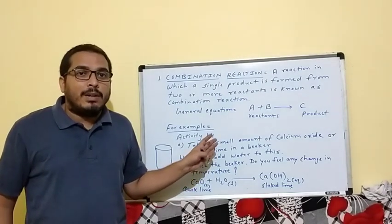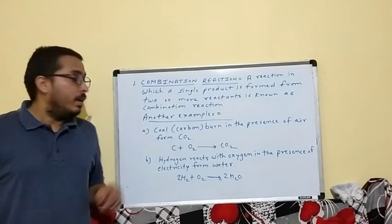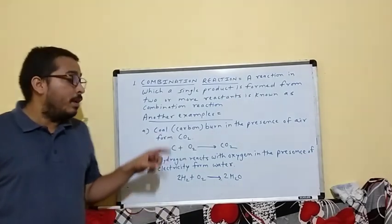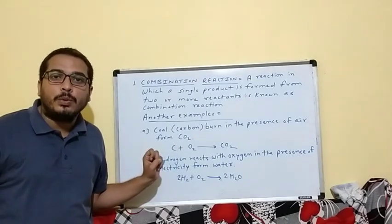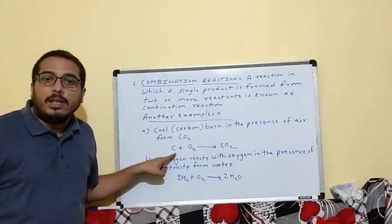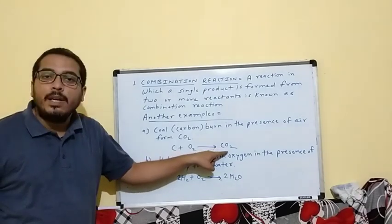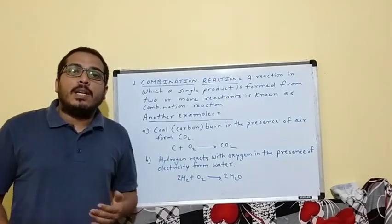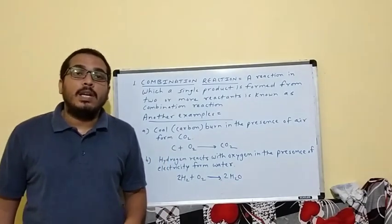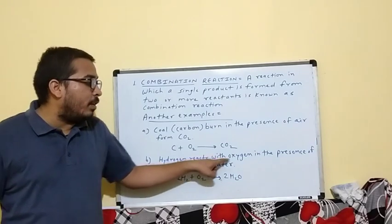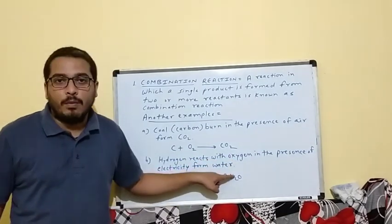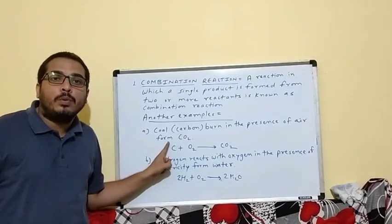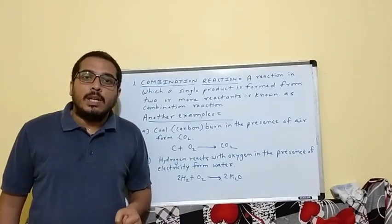Let us see some examples. First, coal — which is made of carbon. When coal burns in the presence of air it forms CO2: C + O2 → CO2. In this reaction two reactants combine to form a single product, so it is an example of combination reaction. Second, hydrogen reacts with oxygen in the presence of electricity to form water. In both these reactions a single compound is formed from two reactants — these are examples of combination reaction.